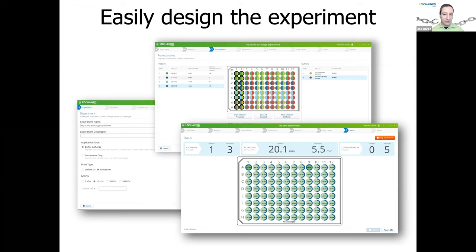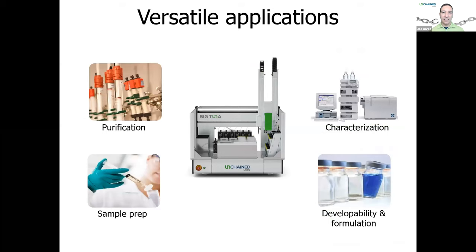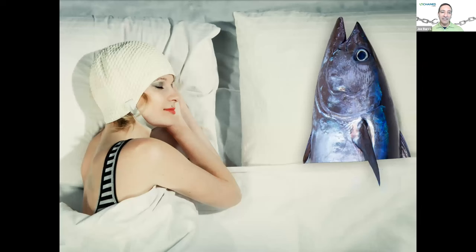The software tells you how to lay out the deck and how much volume you need of everything — all contained within the experimental flow. Big Tuna can be used across different applications requiring buffer exchange, whether that's protein purification where you need to concentrate down a lot of material, all the way to formulation optimization where you have very high protein concentrations to get into a final formulation. Our goal is that Big Tuna will help you rest easy knowing your buffer exchange is taken care of.